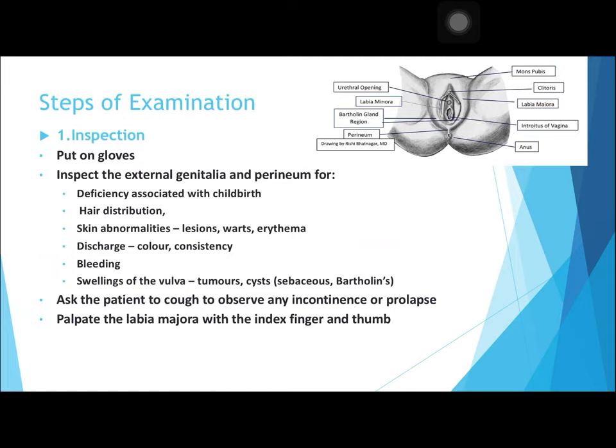Also look for any discharge — noting its color, consistency, and smell — any sign of bleeding, any swelling of the vulva, and any tumor or cyst, especially a Bartholin or sebaceous cyst, which is usually found at the external genital area. Ask the patient to cough to observe any incontinence or prolapse, and palpate the labia majora with the index finger and thumb to find any swelling or lump.